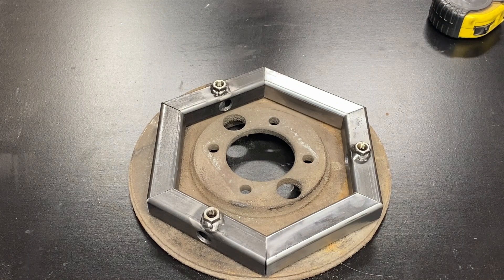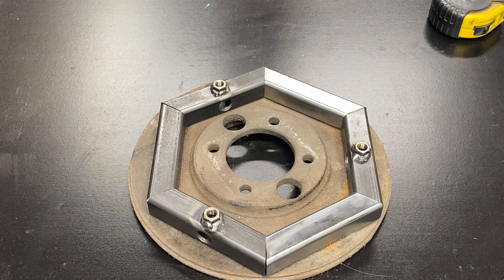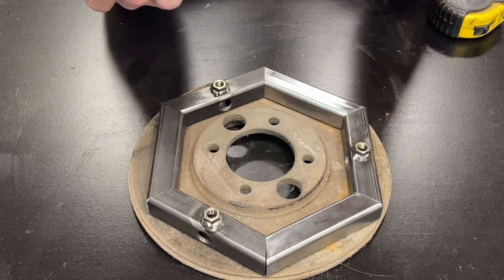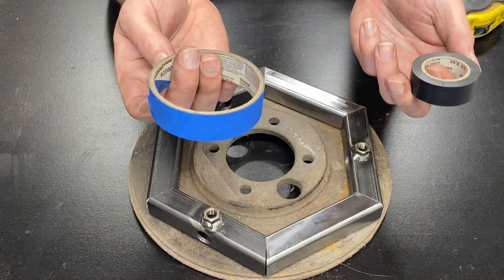What's my hack? How do you make a nearly perfect hexagon every time? Tape. That's right, tape.